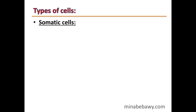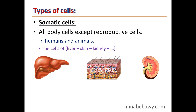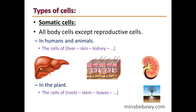There are two types of cells. The first type is somatic cells. Somatic cells are all body cells except reproductive cells. For example, in humans and animals, the cells of the liver, skin, and kidney are somatic cells. In plants, the cells of roots, stem, and leaves are somatic cells.